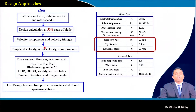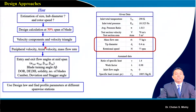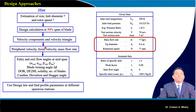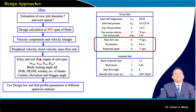Once these are known, we can calculate cascade parameters and check parameters such as diffusion factor, degree of reaction, and D'Haller's factor. We will calculate cascade geometry including stagger angle, camber angle, incidence angle, and deviation angle. Once this is done at the mid-section, we will apply the free vortex design method to calculate parameters at different stations along the span.